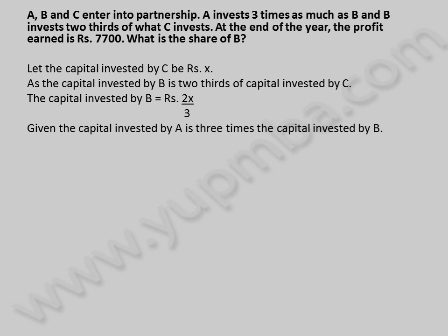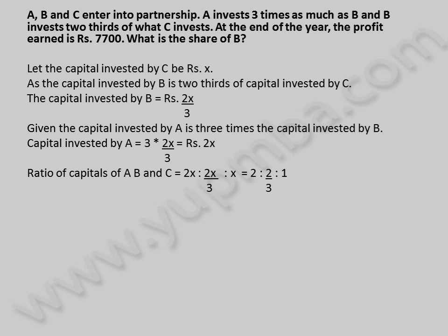Given the capital invested by A is three times the capital invested by B, capital invested by A is equal to 3 into 2X by 3, which equals 2X rupees. Ratio of capitals of A, B, and C is equal to 2X : 2X/3 : X, which simplifies to 2 : 2/3 : 1.